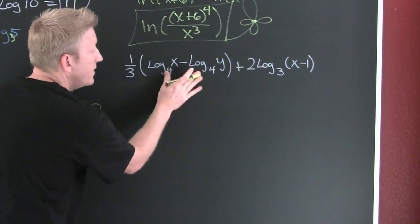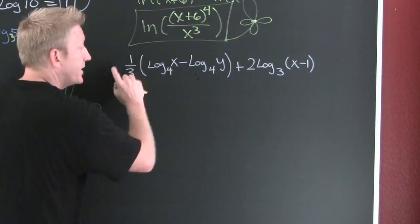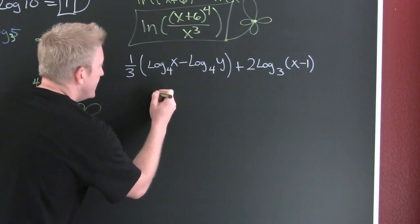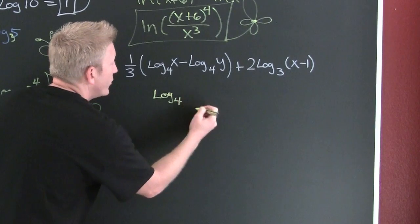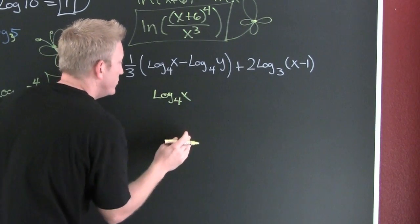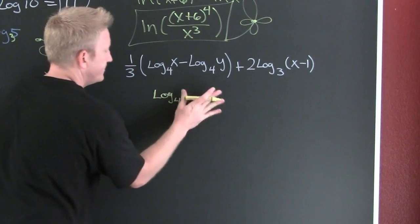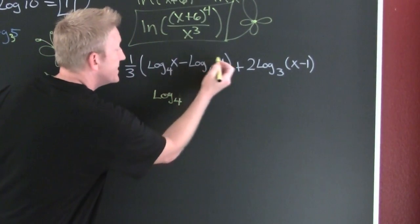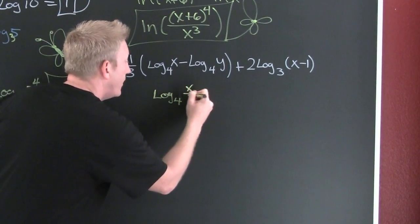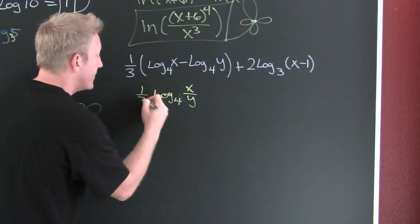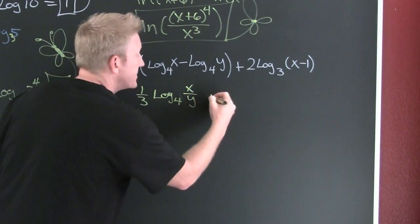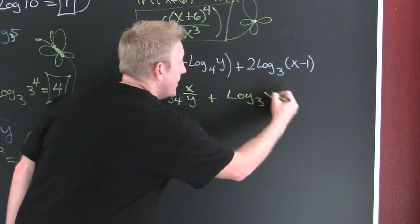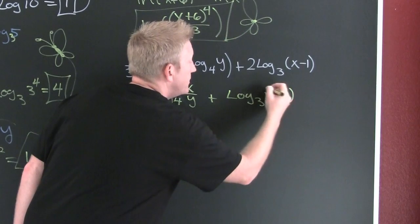Toughie. First I'm going to take care of the difference of the logs. I could. But I'm going to hold off one moment. This is going to be the log base four of, this is x divided by y. And I'm still going to have the third out front. Plus, let me bring that two up. This is log base three of x minus one squared.